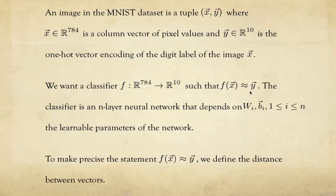We want to make precise the statement that two vectors are approximately the same. To do this, we're going to define the distance between vectors. The y vector is the one-hot encoding of the image, whereas f of x is the vector of prediction of the same image x. We want these two to be similar — in other words, we want f to model the training set.